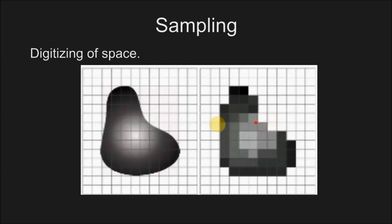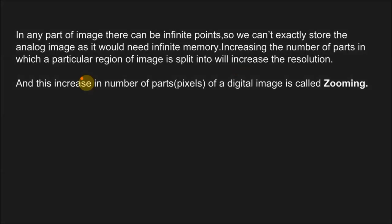Now you would be thinking that we could divide this picture into more number of pixels to increase the clarity. Yes we can definitely do it, but it would eventually increase the memory that would be utilized to store this image, which could be done up to a certain limit only as we do not have infinite memory. In any part of image there can be infinite number of points, so we can't exactly store the analog image as it would need infinite memory.